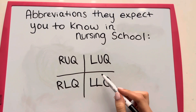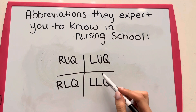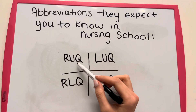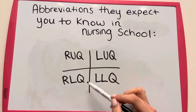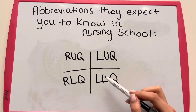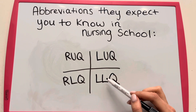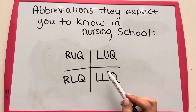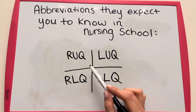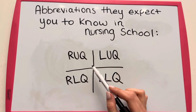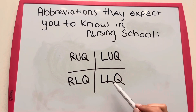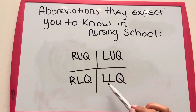These stand for the different quadrants on the abdomen: right upper quadrant, left upper quadrant, right lower quadrant, and left lower quadrant. These can be helpful to describe where a patient is experiencing abdominal pain, and also when describing bowel sounds.